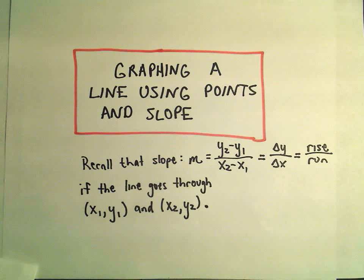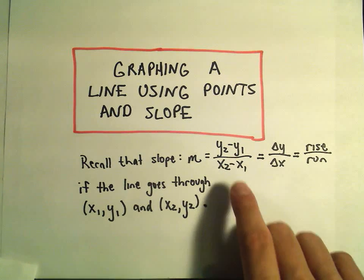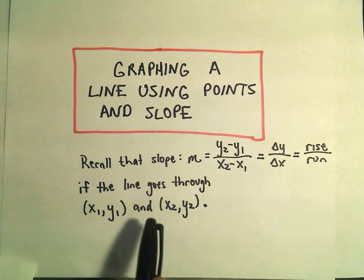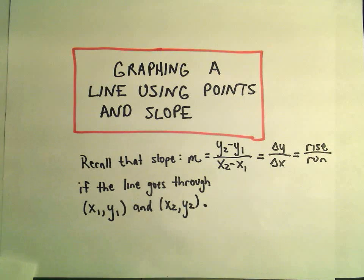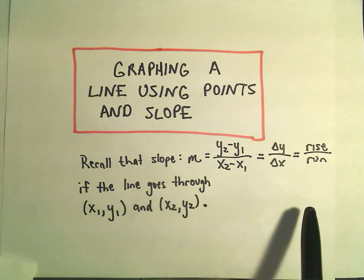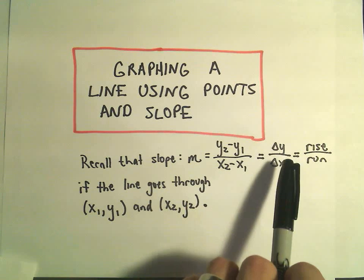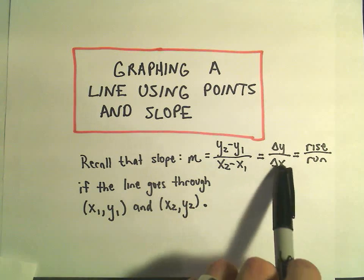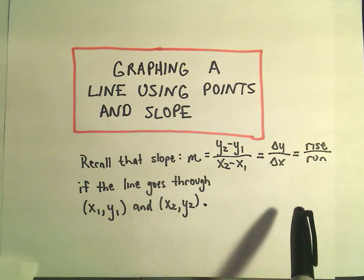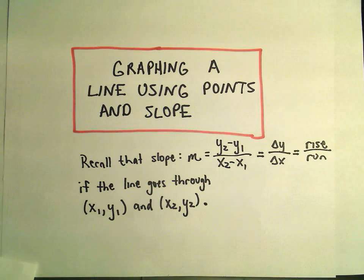So remember that the slope m is y2 minus y1 over x2 minus x1. If the line goes through the points x1, y1 and x2, y2, again, the way I think about slope is sometimes people will say it's the change in y over the change in x, that's the little triangle, you can read that as change, which is rise over run.